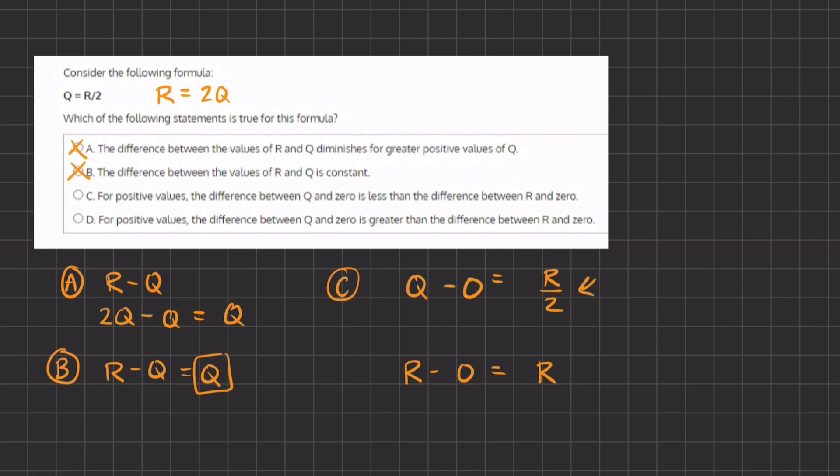So the difference between Q minus 0 is less than the difference between R and 0, because here we have R divided by 2, which is half of R, and here we have a full R. Therefore C is the correct answer.